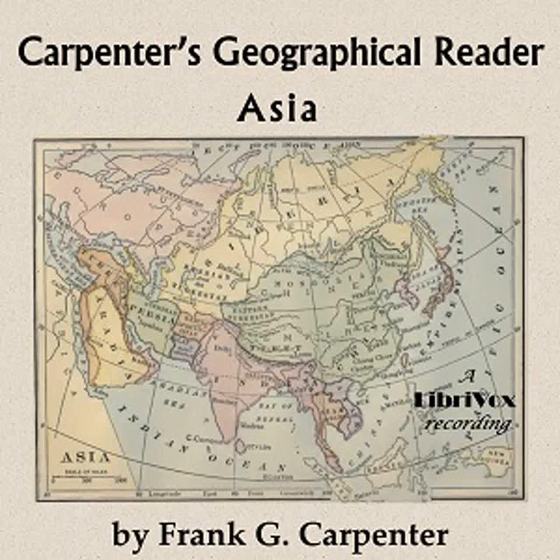Ginrikishas pass by us carrying statesmen to the houses of parliament, and others carry bareheaded ladies out calling or taking the air. There are but few horses and carriages, and very few automobiles. The street cars are everywhere, and the electric roads will take one to any part of the city at a much lower fare than those of our country. Modern machinery is doing away with hand labor in many of the shops, yet we are impressed with the fact that human muscle is still performing a large part of the work of Japan.